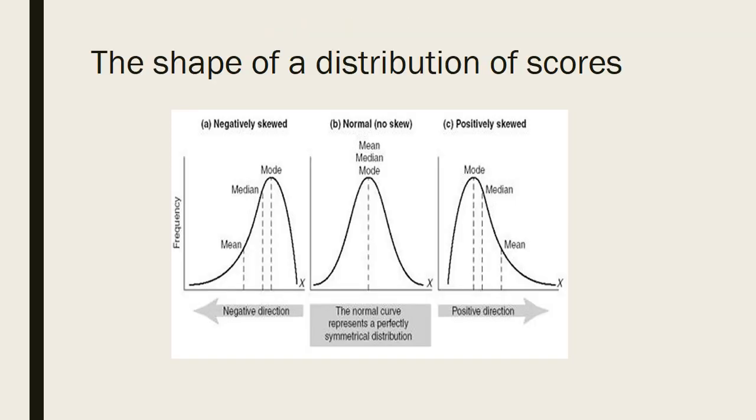A frequency distribution is a way of organizing data to show how often a value or measure occurs in a set of data. It shows all the possible values of what has been measured and the number of times each value occurs in the set of data. The scores often arrange from lowest to highest so that the data is presented in an orderly and logical way. The visual nature of the graph then allows us to describe that distribution shape.